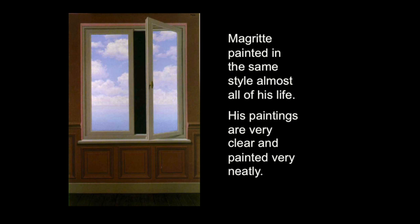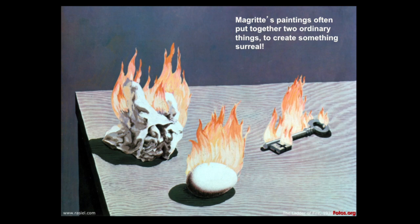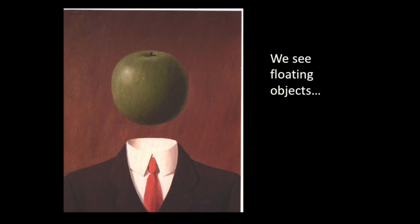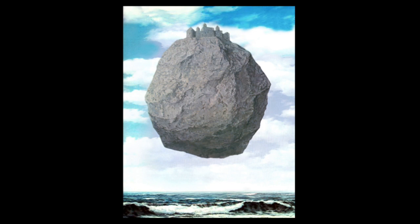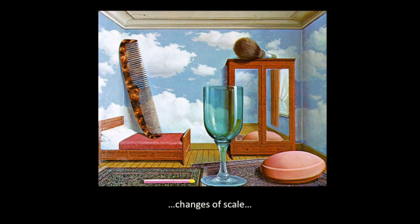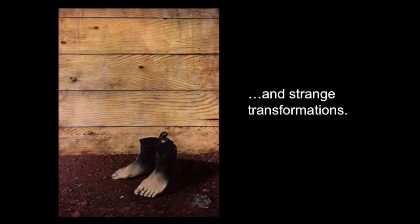Magritte's paintings often put together two ordinary things to create something surreal, like a key that's on fire, or a rock that's on fire, or an egg. Can those things go up into the air like that? We see floating objects in his artwork and changes of scale — scale means what the size of one object is compared to another. Keep an eye on this one because we're going to do something similar for our artwork. And we see strange transformations in his artwork. What do you think this painting is about? It's called The Reckless Sleeper.